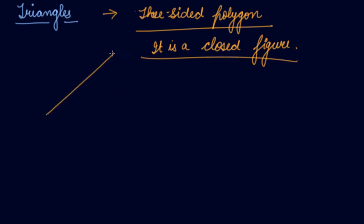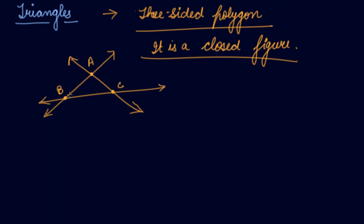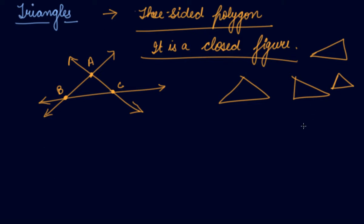Let's say I have drawn one line, then another line. The intersecting point is A, and the other intersecting points are B and C. So with this, I can find out that A, B, C is a triangle. A triangle can be shaped like this, or like this, or like this — all these are triangles. This is the shape of a triangle: a three-sided polygon.